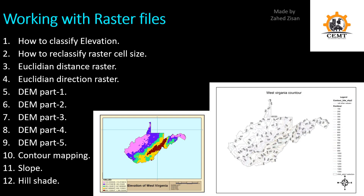The next section is on working with raster files. We'll learn how to classify elevation, reclassify raster cell sizes, create Euclidean distance and Euclidean direction rasters. There's also a five-part DEM series where I show you how to make a raster file using Google Earth Pro and ArcGIS. DEM stands for Digital Elevation Model and holds elevation data. We'll also cover contour mapping, slope mapping, and hillshade mapping.